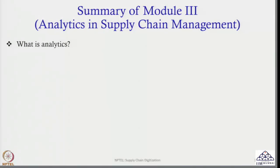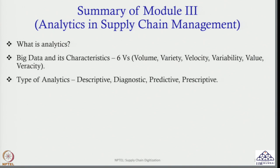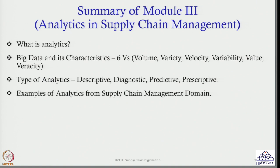First we talked about what is analytics, then we talked about big data and its characteristics, that is 6 Vs: volume, variety, velocity, variability, value and veracity. Then we also talked about types of analytics: descriptive, diagnostic, predictive and prescriptive. Then we gave various examples of analytics from the supply chain management domain.